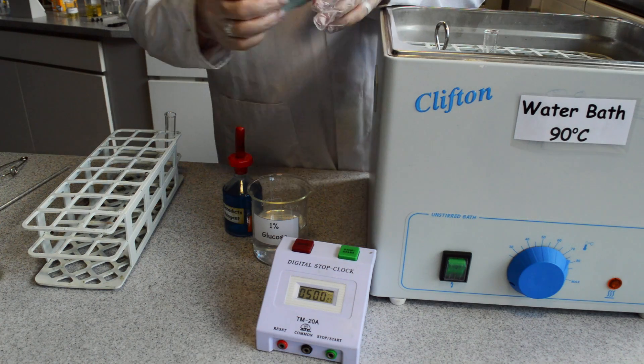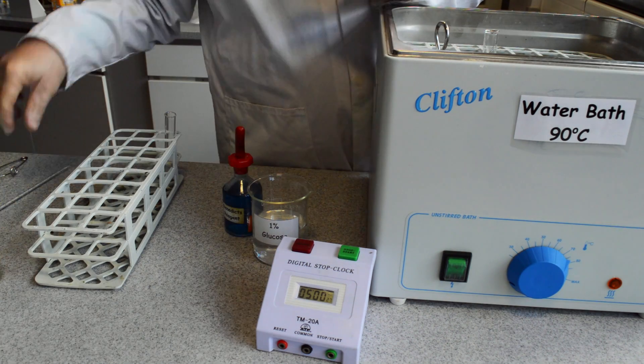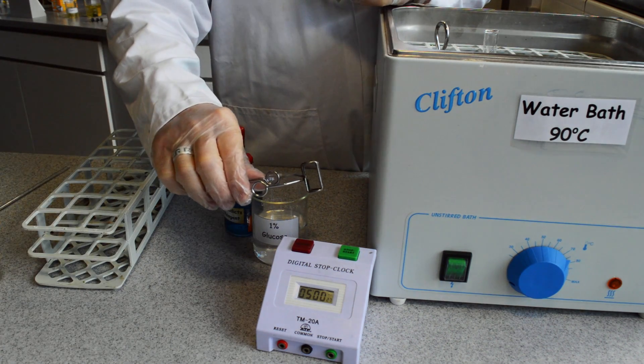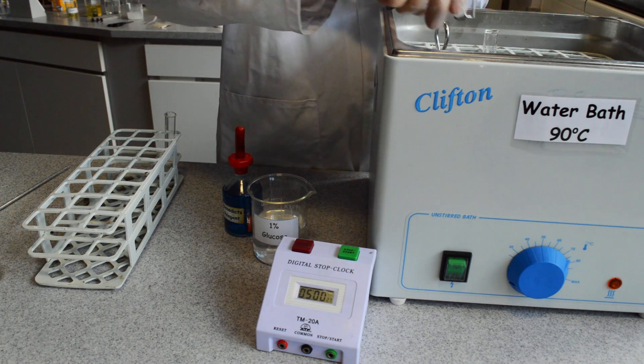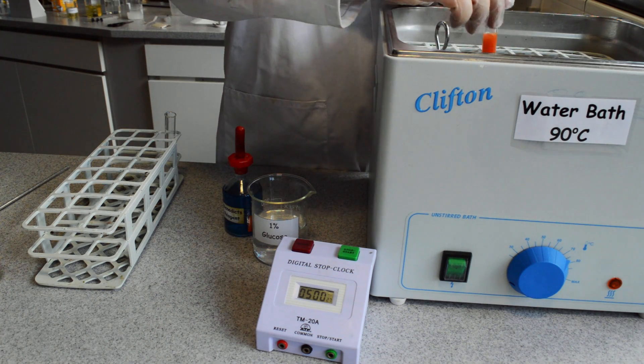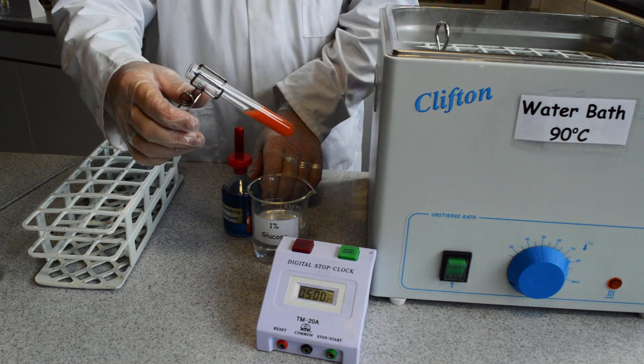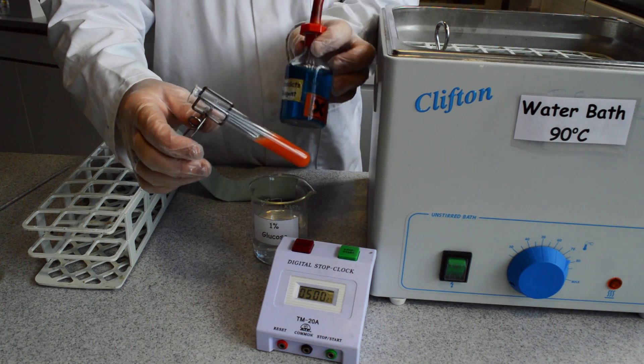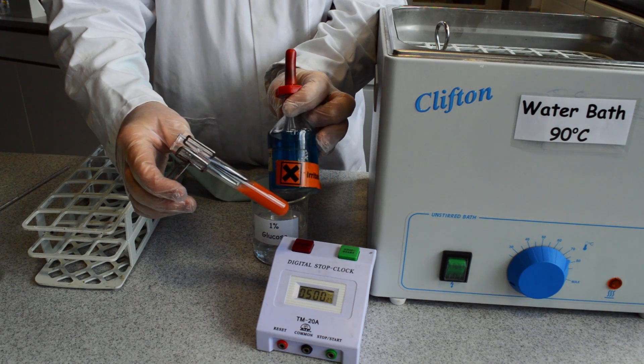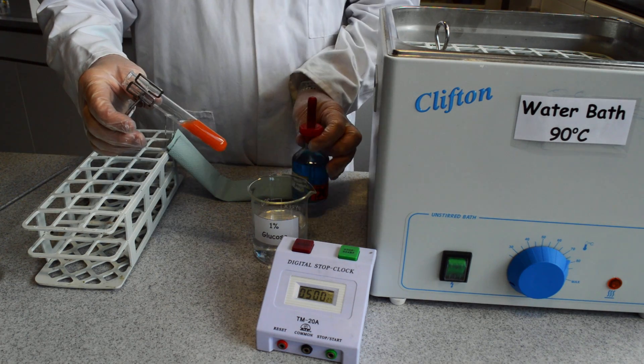Remove the sample from the water bath using a paper towel or test tube holders as it will be hot. The Benedict's reagent changes from a blue colour to produce a brick red or orange precipitate.